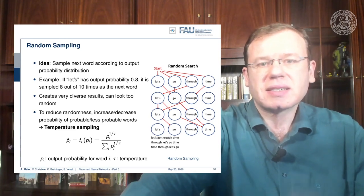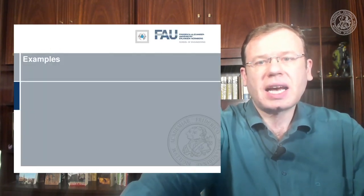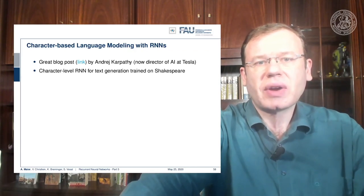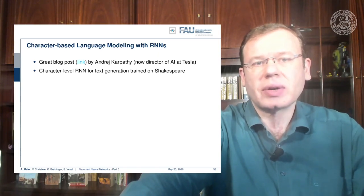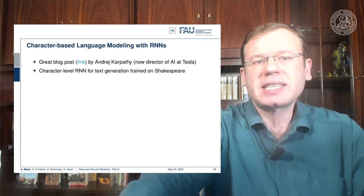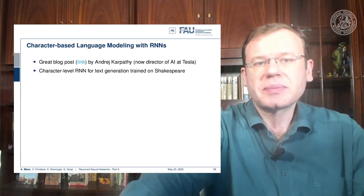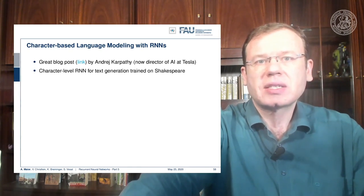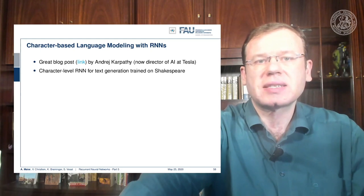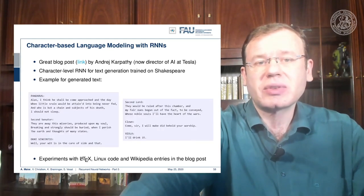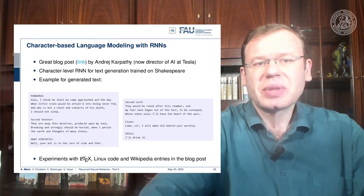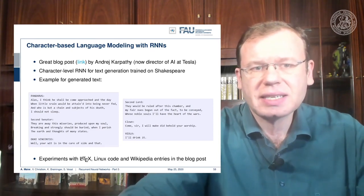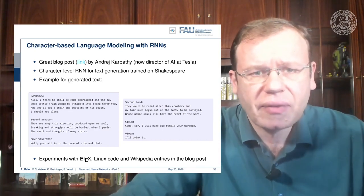Let's look into some examples. One thing that I found very interesting is character-based language modeling with RNNs. There's a great blog post by Andrej Karpathy, which we have here as a link. He essentially trained an RNN for text generation based on Shakespeare, and it's trained on character level. You only have one character as input and then you generate the sequence, and it generates very interesting sequences.